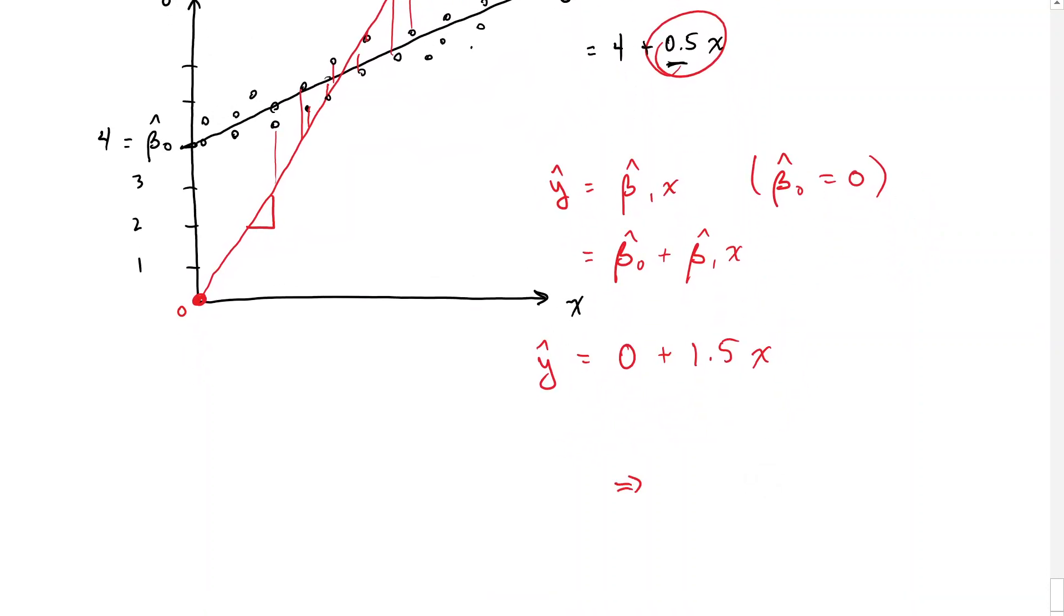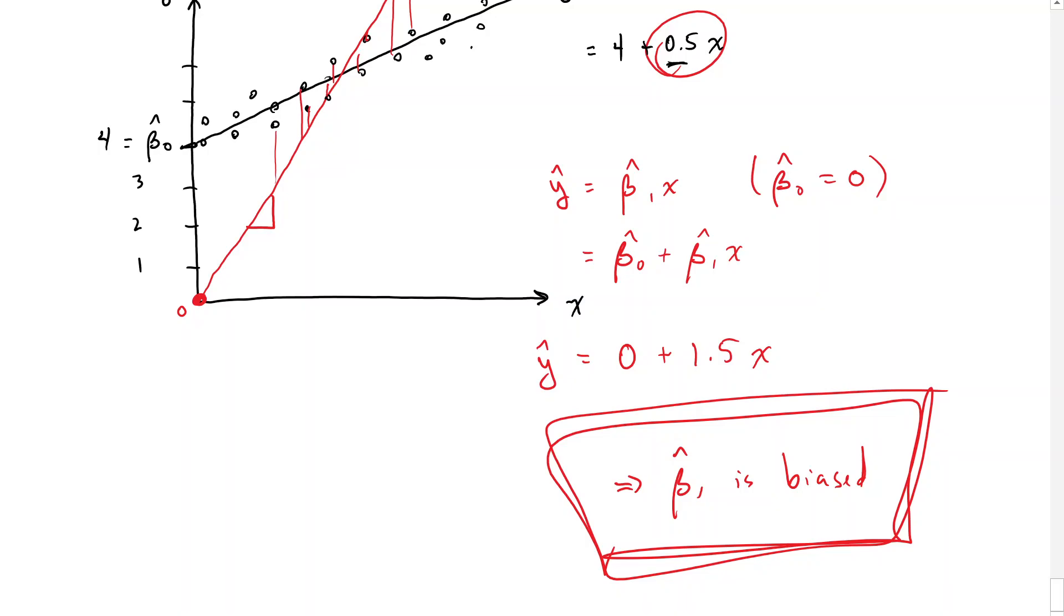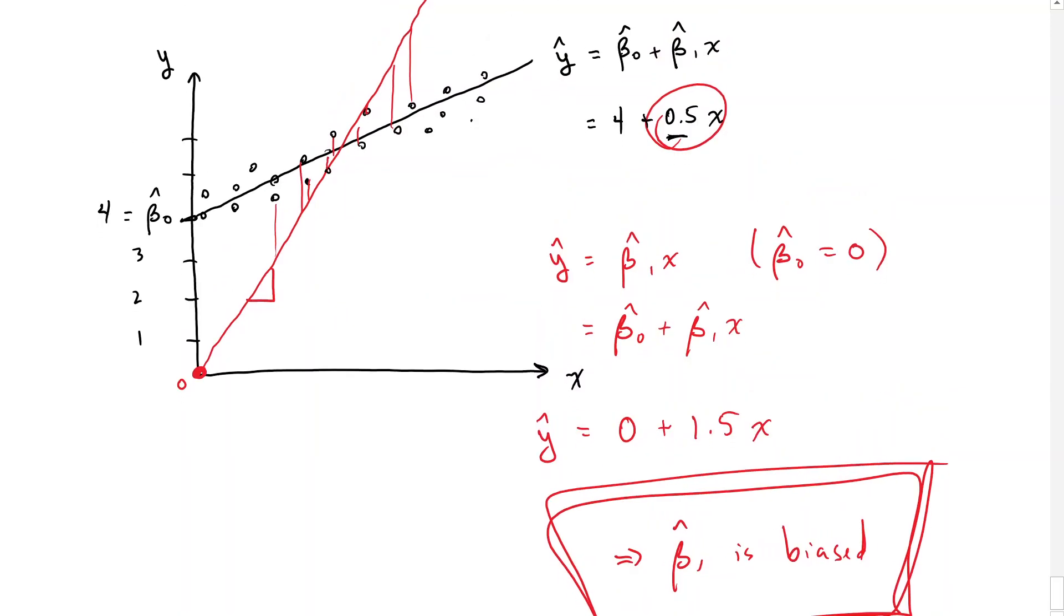And so what's the problem here? The beta one estimate is biased. And so if you think that it's going to have a small effect, if the true effect is maybe quite small, if you leave out a constant term, your new estimated effect might be much larger than is actually the case. And if you're making some policy or putting some new procedure into place based on that, you're going to think,